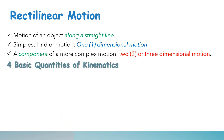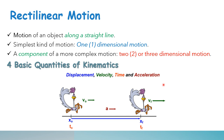Let's discuss rectilinear motion, which deals with the motion of an object along a straight line. This is the simplest kind of motion — the one-dimensional motion. In the next chapters, we will study components of more complex motion: two- or three-dimensional motion. There are four basic quantities of kinematics: displacement, velocity, time, and acceleration.